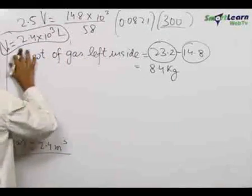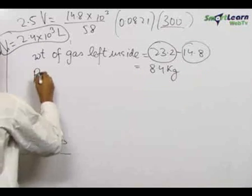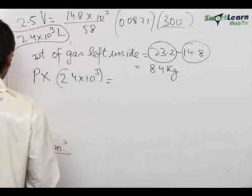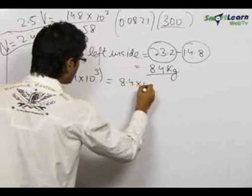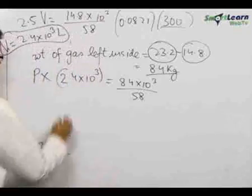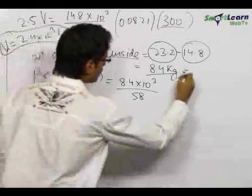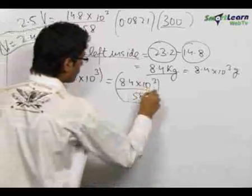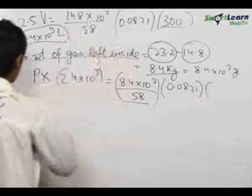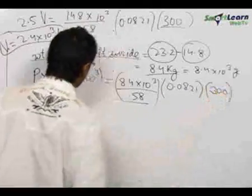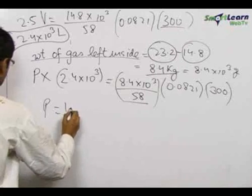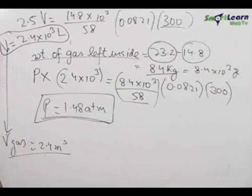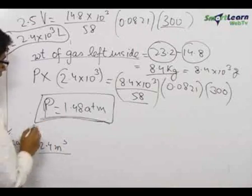Since the volume of the cylinder remains constant, we apply PV = NRT for the final state. The final pressure into the volume of 2.4 into 10³ liters equals the number of moles, which is 8.4 into 10³ grams divided by 58, multiplied by 0.0821, multiplied by the final temperature of 300 Kelvin (temperature inside the cylinder remains constant). Solving gives the final pressure equal to 1.48 atmospheres.